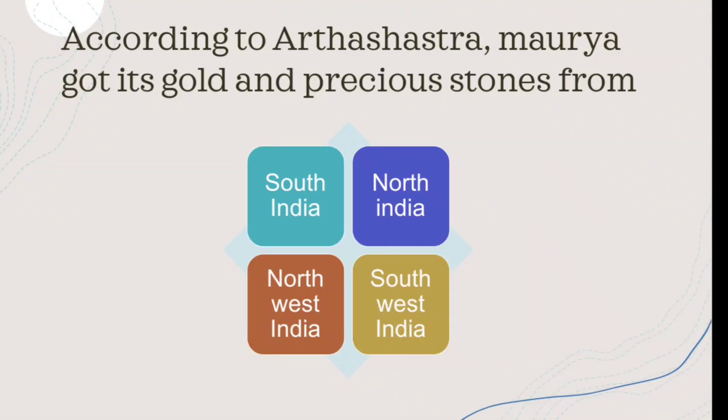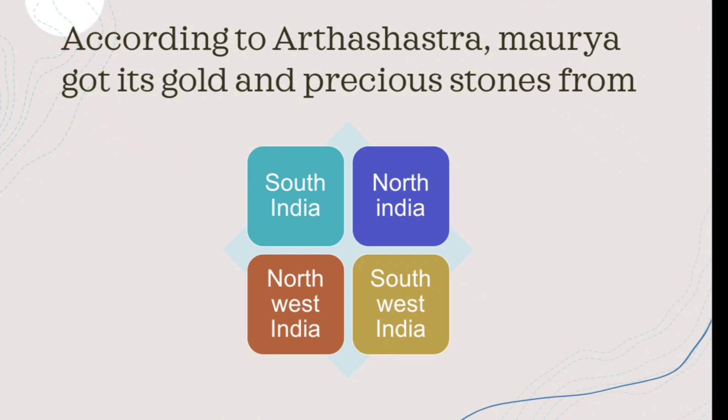According to the Arthashastra, the Mauryas got their gold and precious stones from where? The right answer is South India. The Arthashastra, written by Kautilya, mentions that the Mauryas obtained their gold and precious stones from South India.